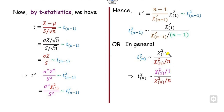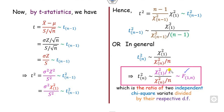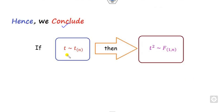If we divide by 1, the expression remains the same. This N is the degree of freedom of one chi-square term, and 1 is the degree of freedom of the other. These two chi-square variates — with degrees of freedom 1 and N — are independent random variables. So this is the ratio of two independent chi-square variates divided by their degrees of freedom, which means it follows the F distribution with degrees of freedom 1 and N. Therefore, if T follows the T distribution with N minus 1 degrees of freedom, then T-squared follows the F distribution with 1 and N degrees of freedom.